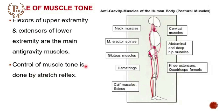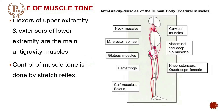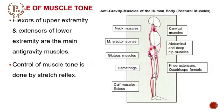Control of muscle tone. When we look at the picture, here is an example of a few groups of anti-gravity muscles. Flexors of the upper extremity and extensors of the lower extremity are the main anti-gravity muscles. Other than that, we also have the muscles of the neck, trunk, and abdomen, which are going to maintain this erect posture against gravity. Muscle tone is maintained because of the stretch reflex.